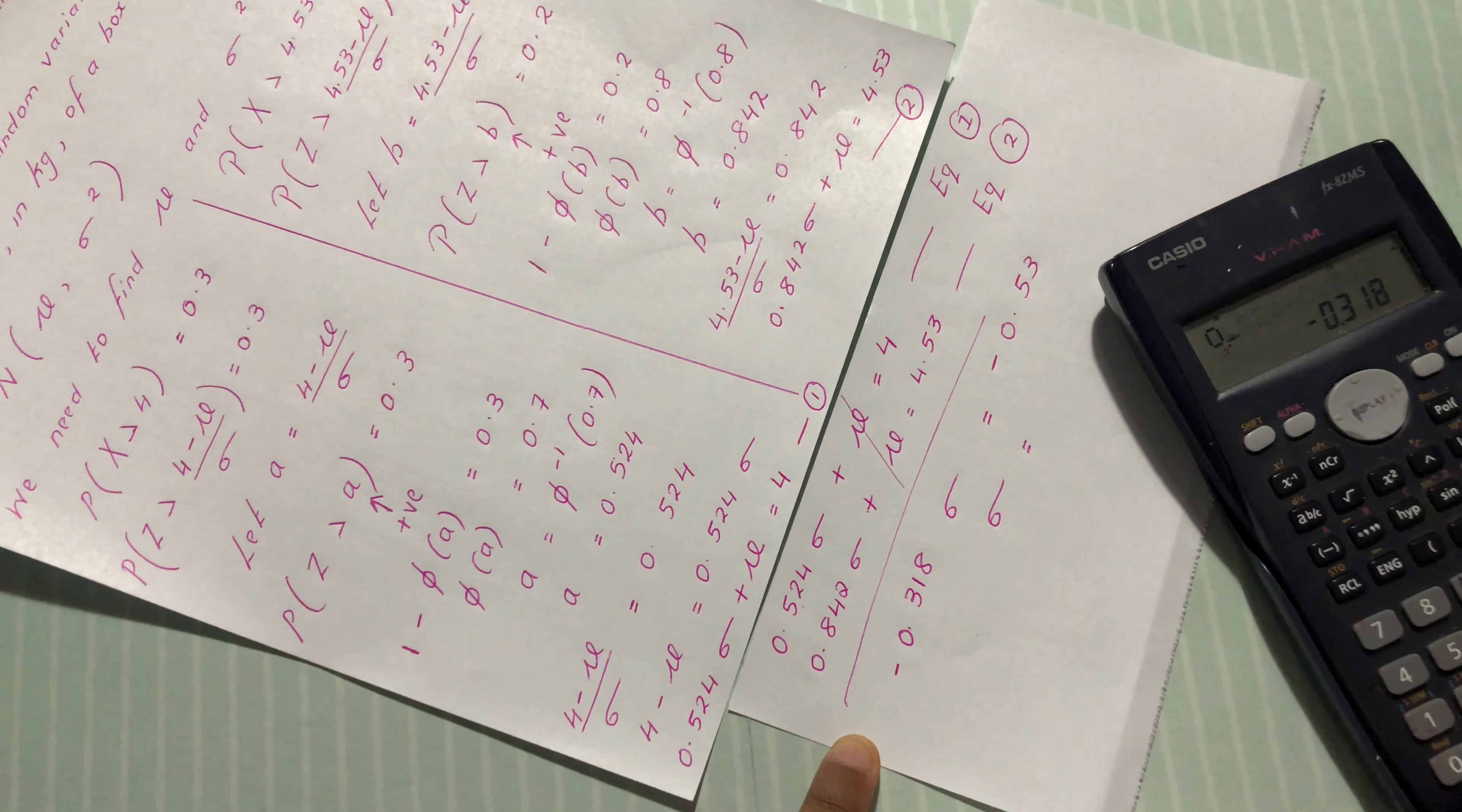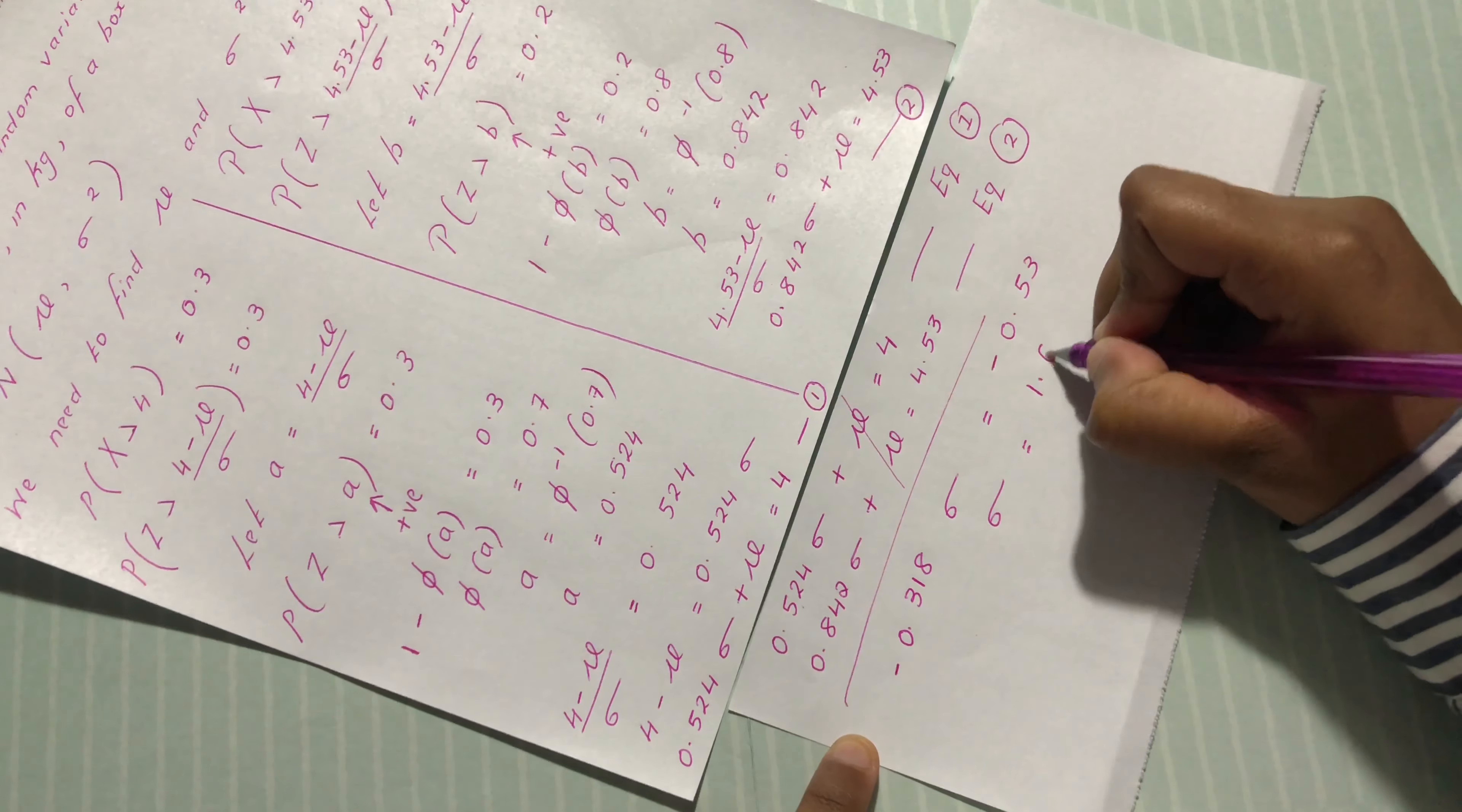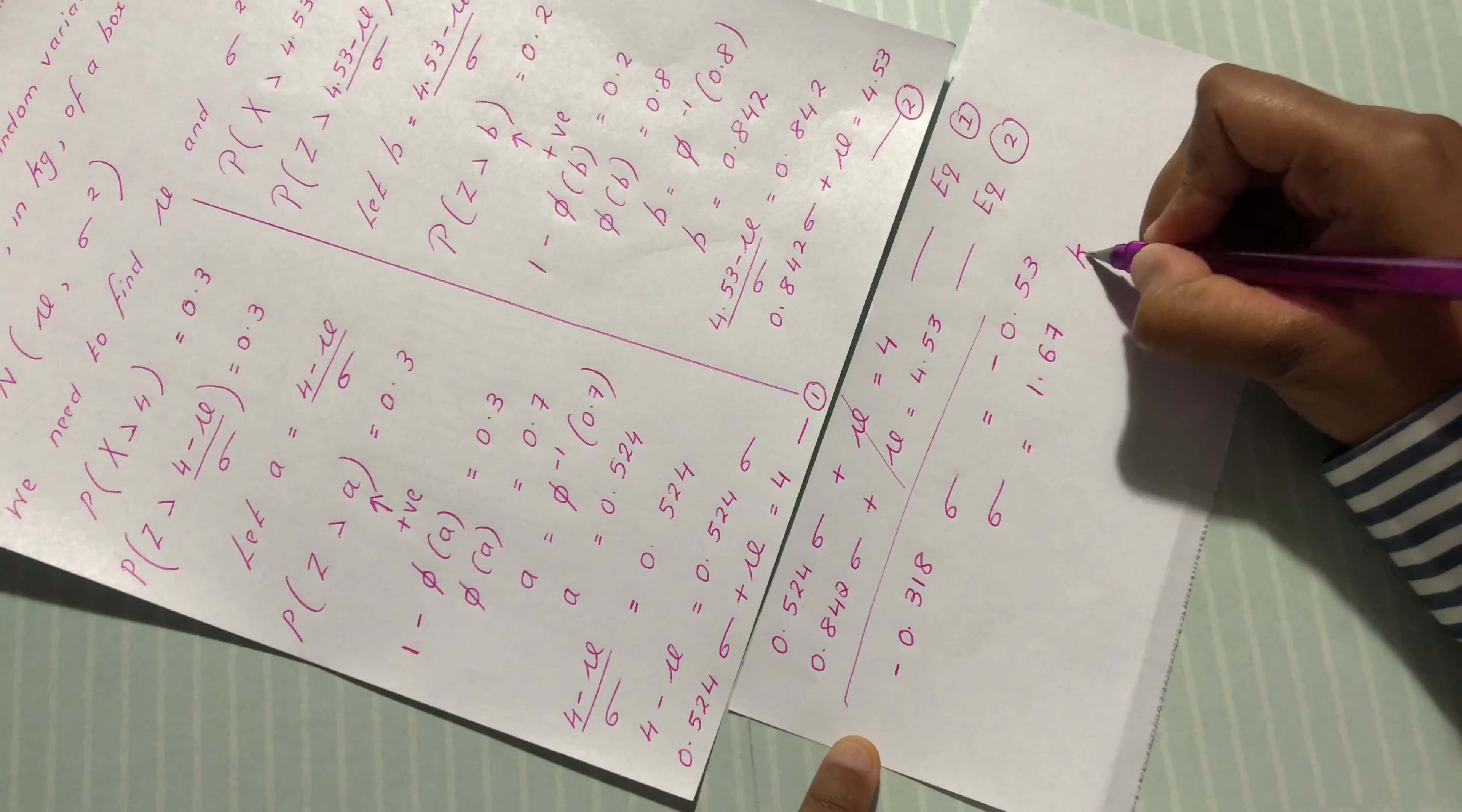Making sigma subject of formula, we have 0.53 divided by the answer, so 1.67. Sigma is 1.67 kg.